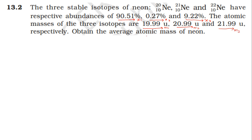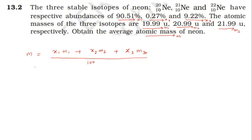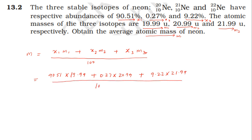Putting: abundance of neon-20 into mass of neon-20, plus abundance of neon-21 into mass of neon-21, plus abundance of neon-22 into mass of neon-22, divided by 100. That is: (90.51 × 19.99) + (0.27 × 20.99) + (9.22 × 21.99), whole divided by 100.